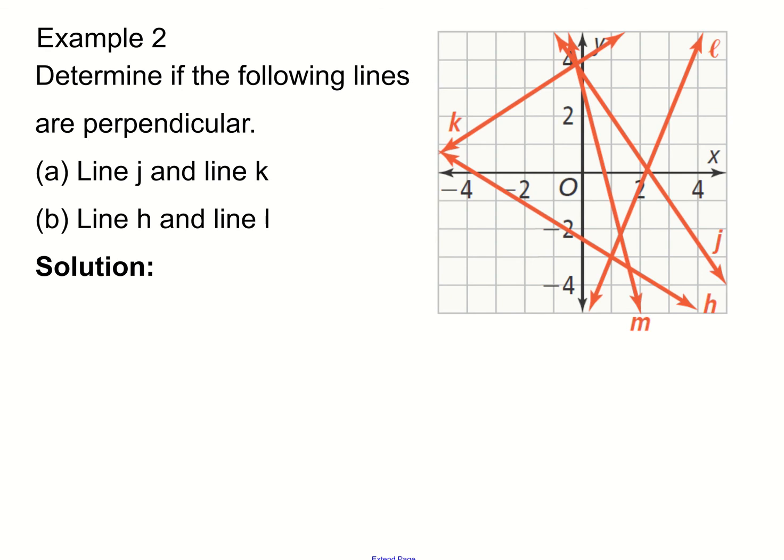Now let's determine if the following lines are perpendicular — similar to what we did for parallel, but now instead of the slopes being the same, the slopes must be opposite reciprocals, or their product must equal negative one. Let's find the slope of line J. We need to pick two good points on that line.